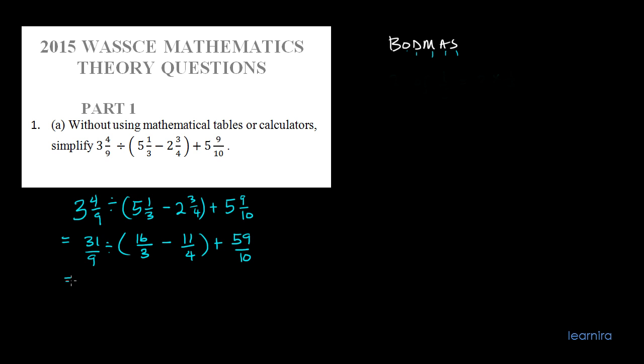Following BODMAS, we have to consider the fractions in the brackets first, which is 16 over 3 minus 11 over 4. We have to simplify that.